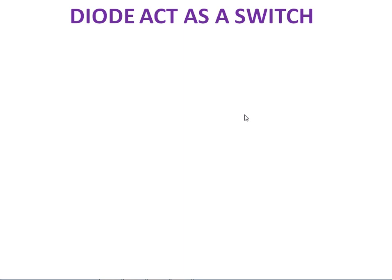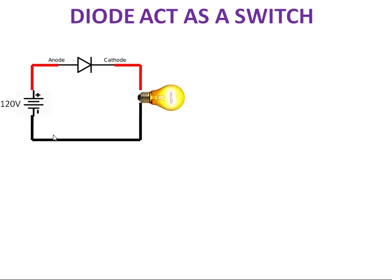We can use a PN Junction Diode as a switch. How is it acting as a switch? See the circuit. Here that 120V DC supply is connected with an incandescent lamp through the diode. Your anode is connected to high potential, cathode is connected to low potential. This condition is known as forward bias, so your diode will act as an on switch.